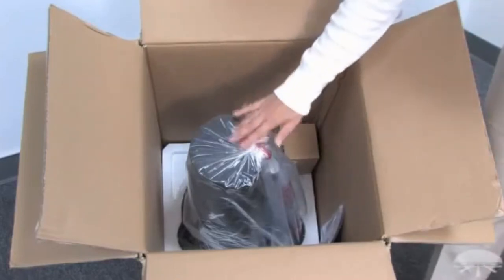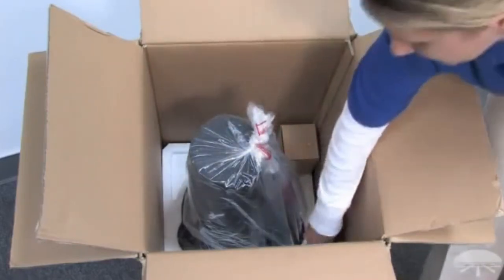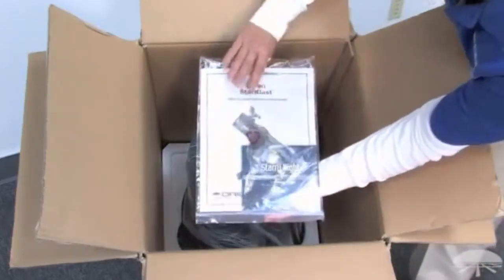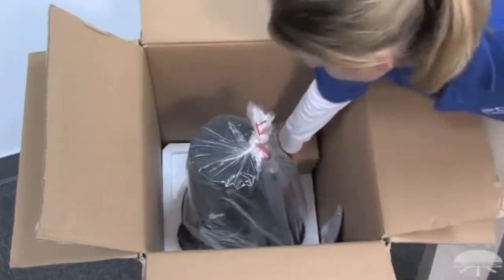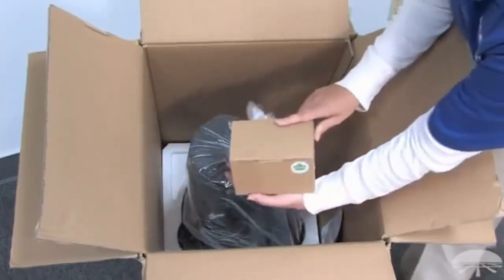It's the telescope and the base which comes assembled, the instruction manual and the Starry Night DVD, and the Starblast 4.5 accessory kit.